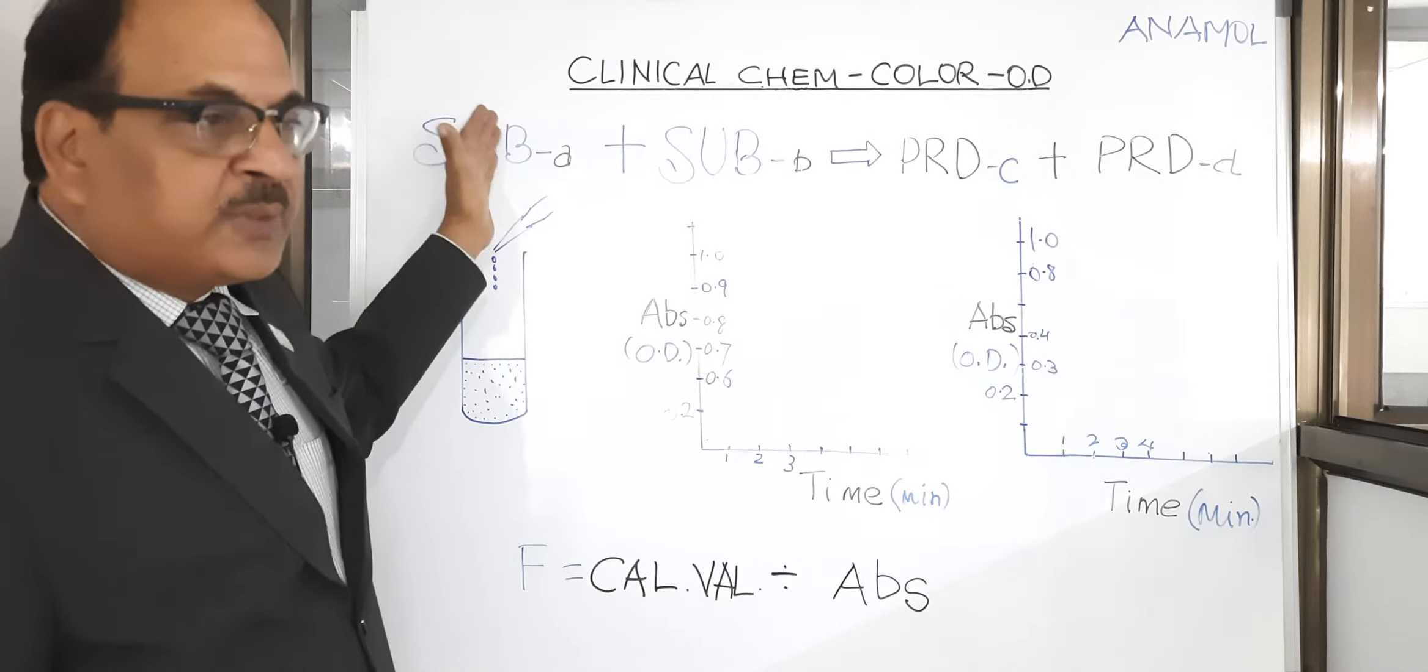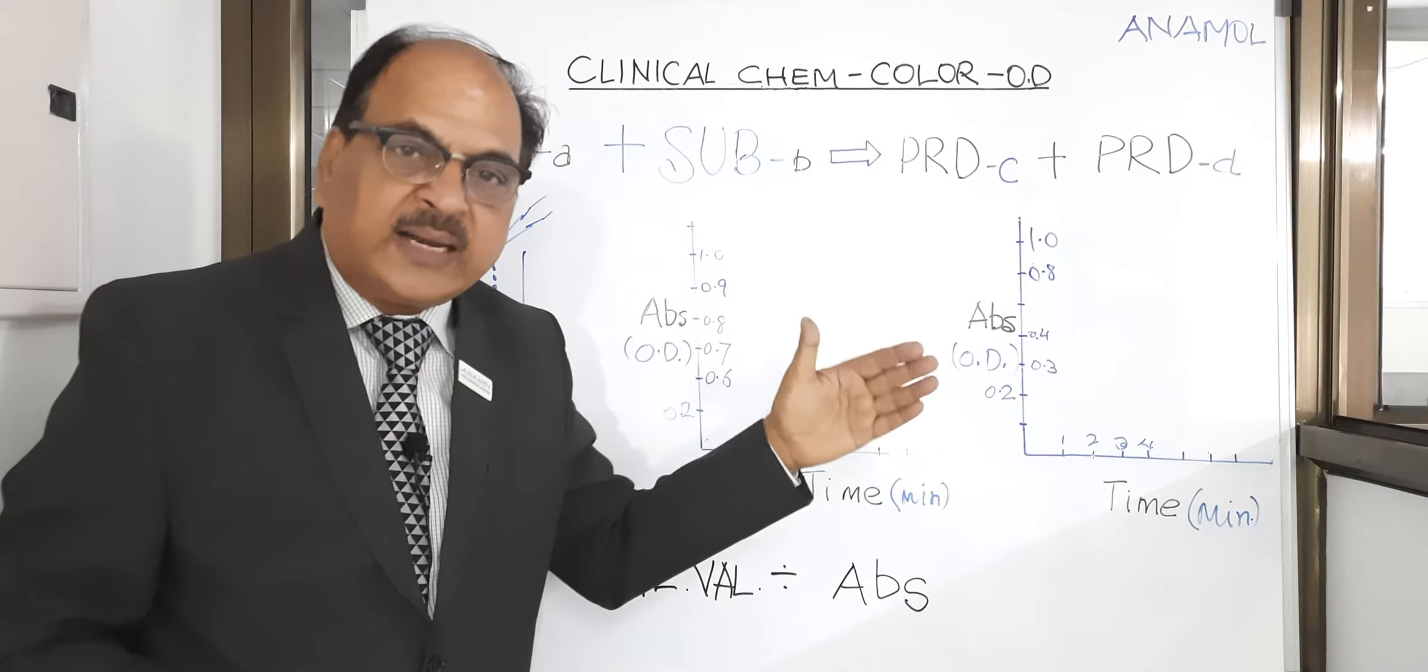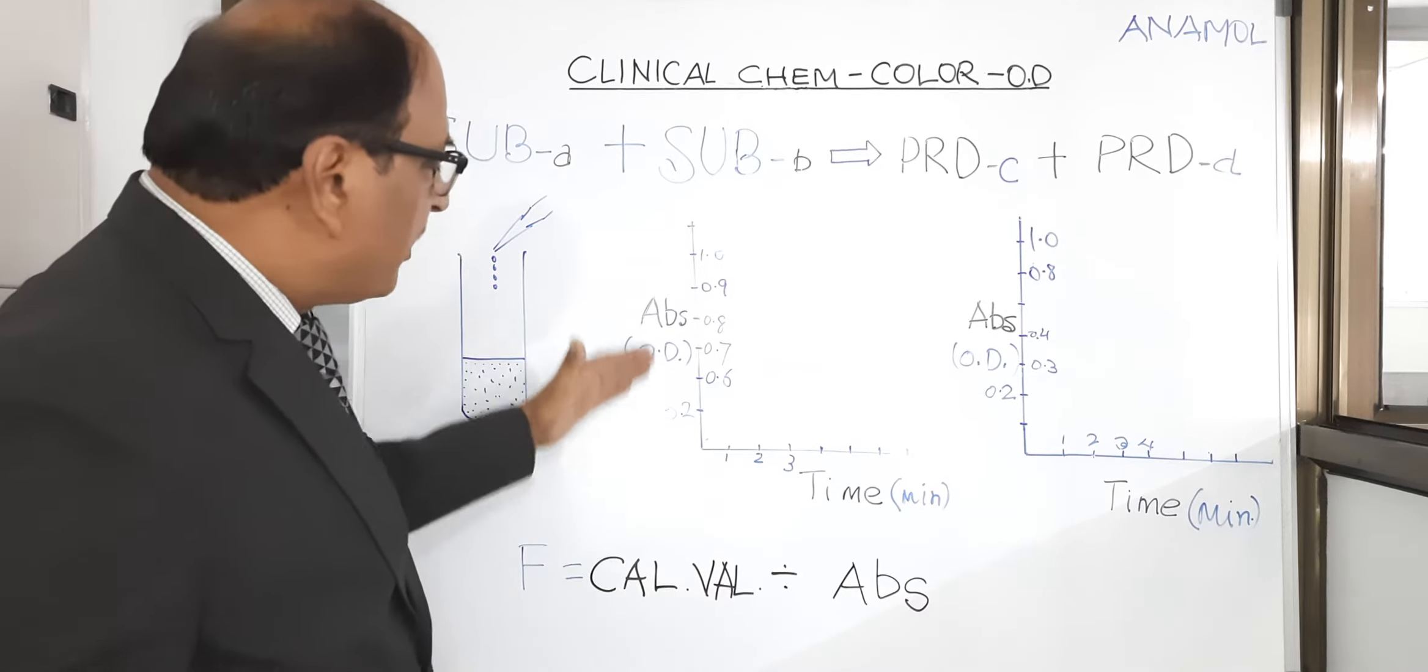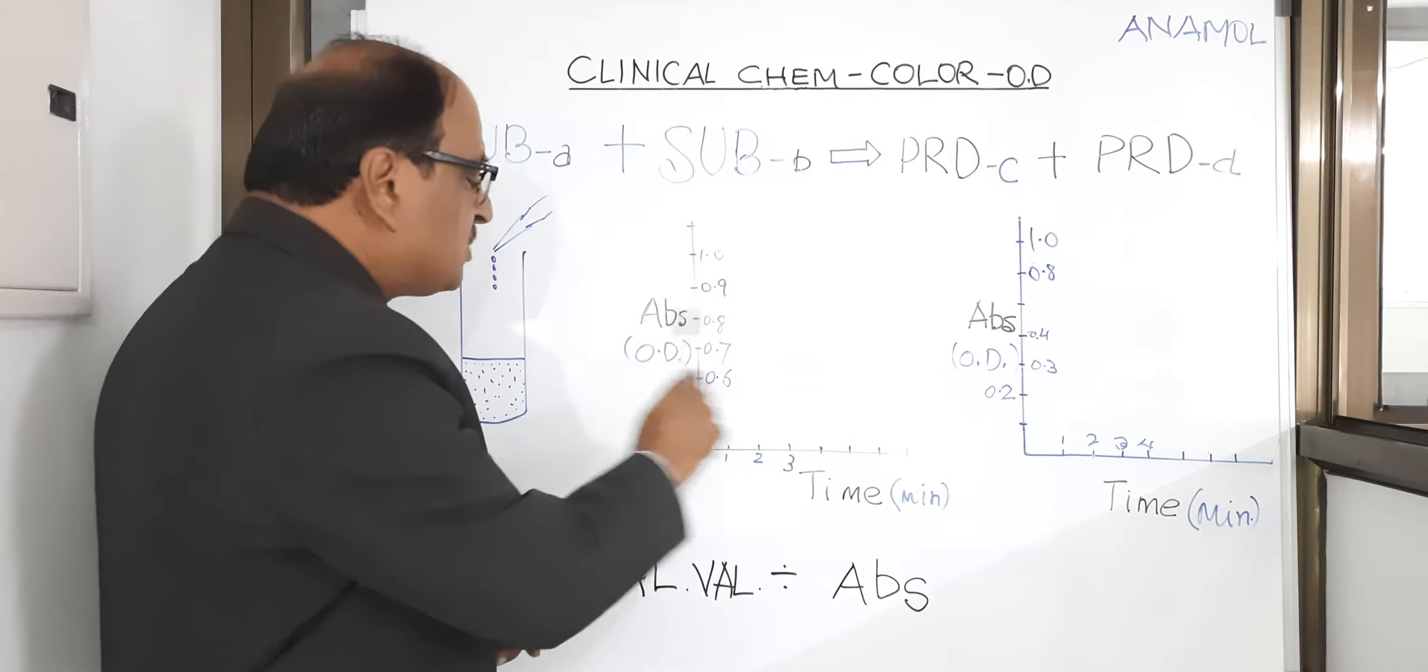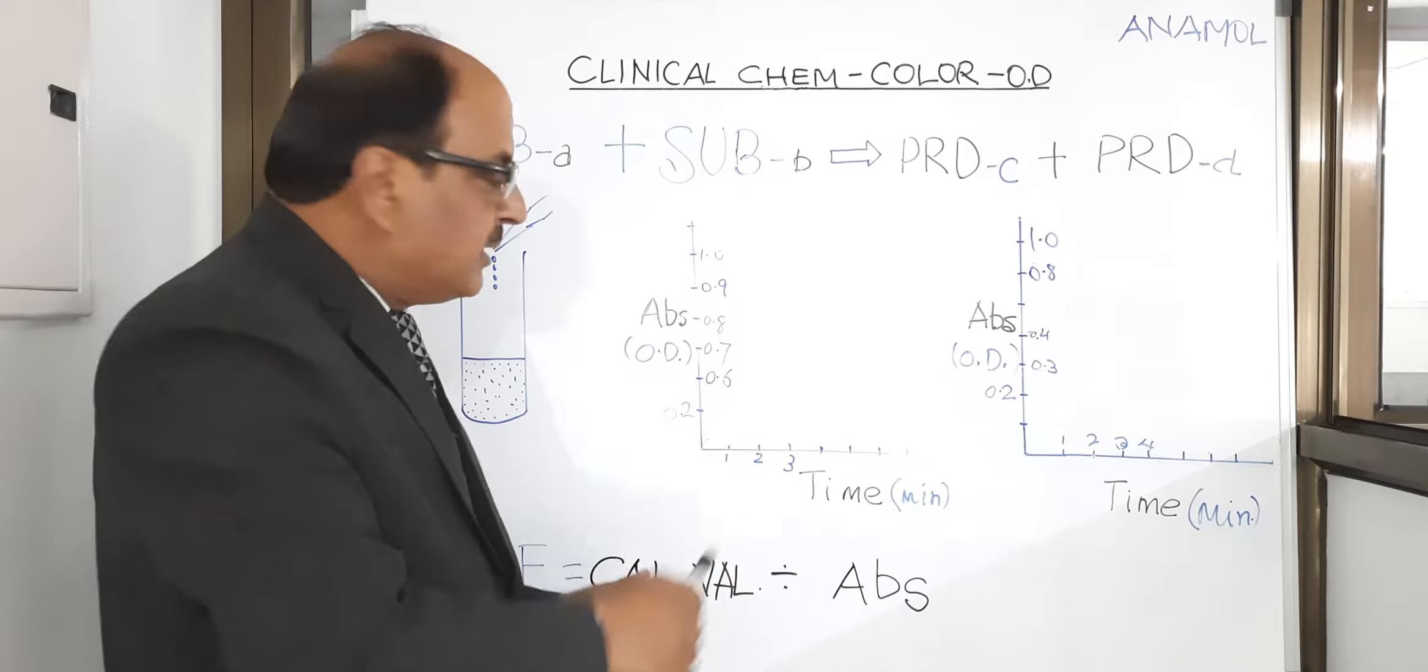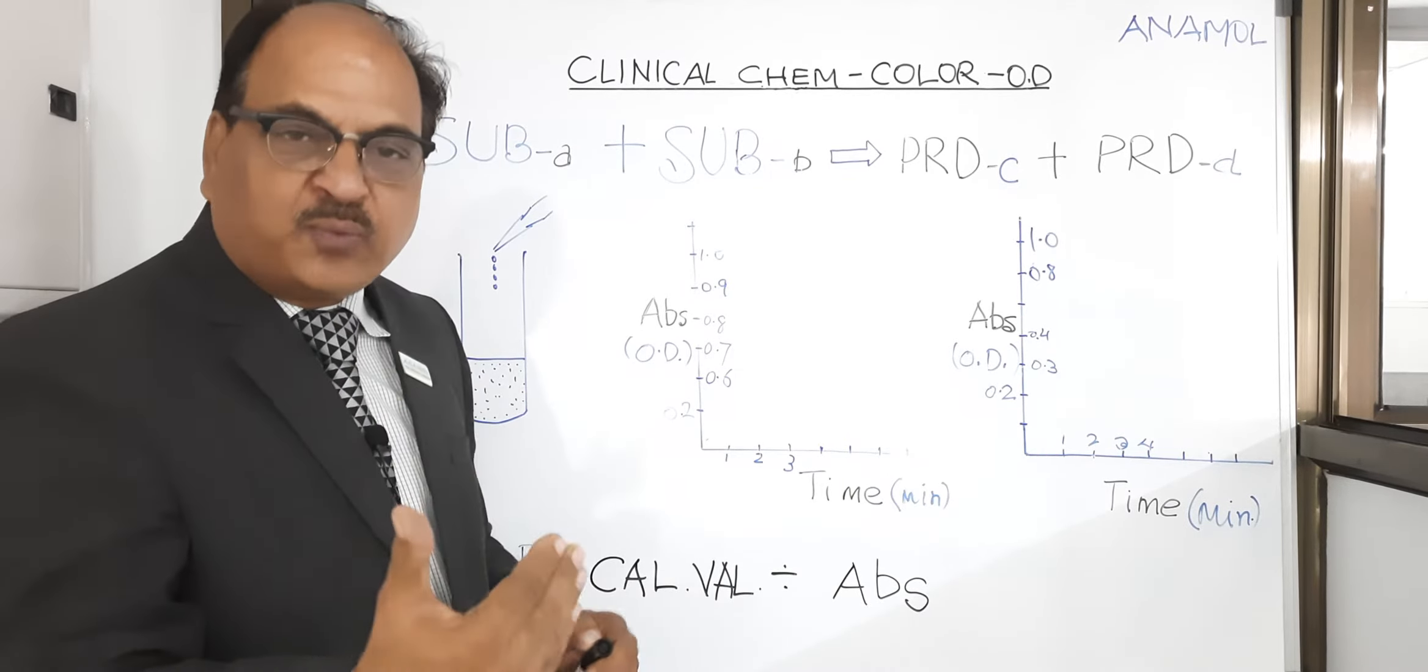Increases when the product is colored, decreases when the substrate is colored, because substrate gets consumed and product gets formed. So as the color increases, your instrument takes optical density. Your graph is between absorbance versus time.